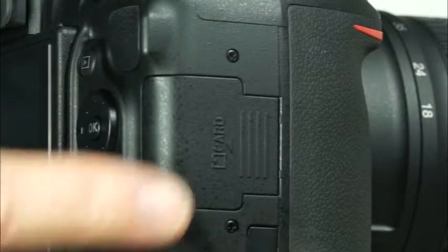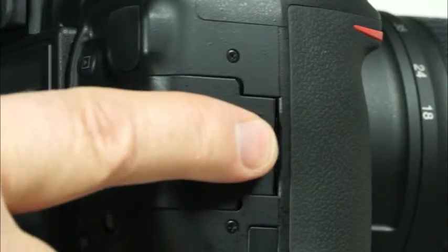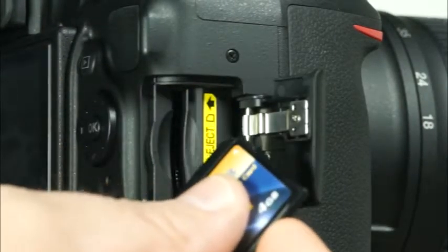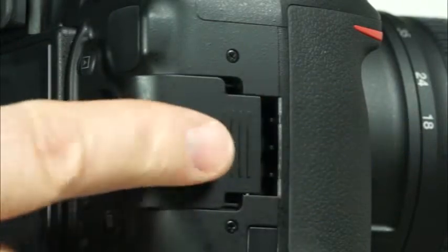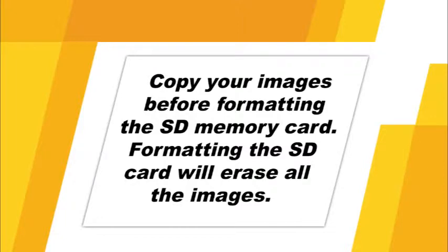On this side of the camera we'll find the SD memory card slot cover. When you're inserting a memory card, you'll want to make sure that the manufacturer's logo is facing the back of the camera. Simply insert the card until it clicks into place and close the card slot cover. Before you start taking pictures with a new memory card, it's a good idea to format it. Also keep in mind that your camera will operate faster if you periodically format the memory card rather than simply deleting images from it to free up space. Make sure that you don't format your card unless you have already copied the images that you want to save to your computer. Formatting your card will erase all the images.